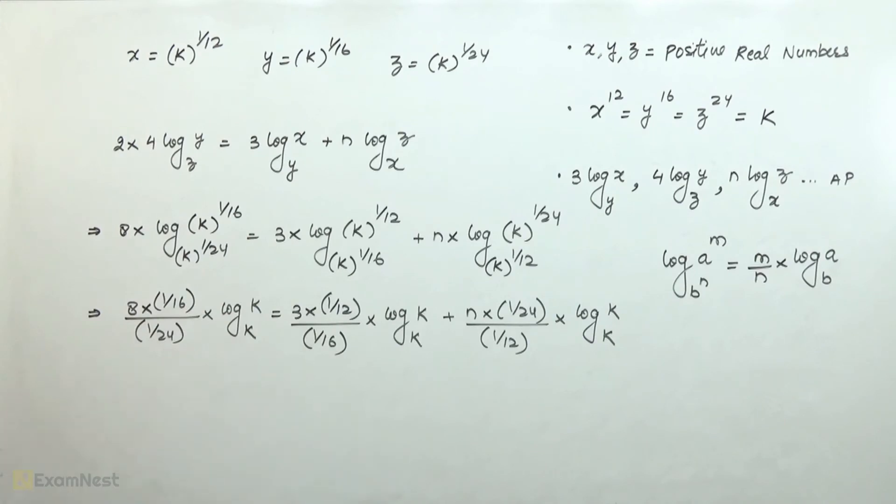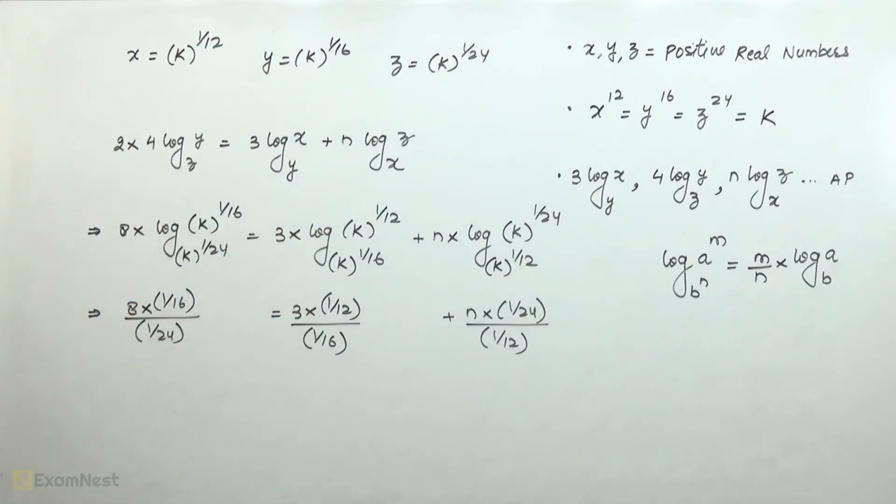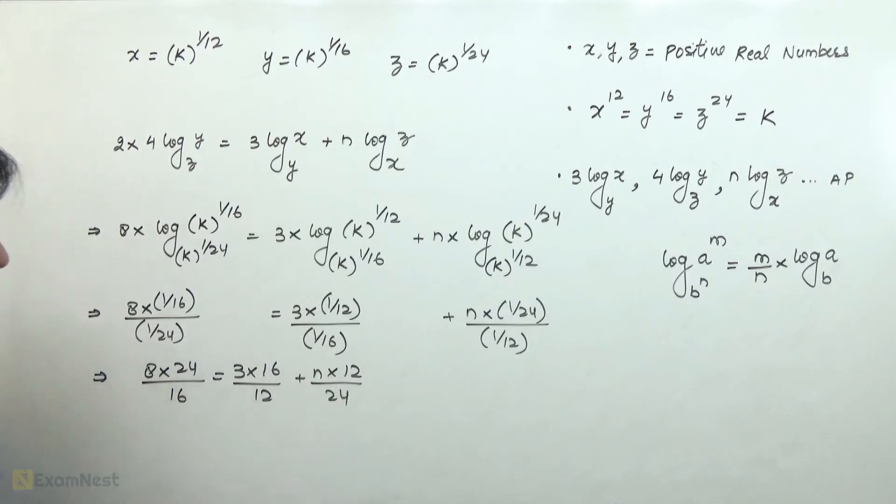Log of k to the base k will be 1, so we can remove it. If we solve this, 16 will come down and 24 will go up, so we get 8 into 24 over 16